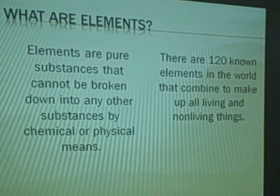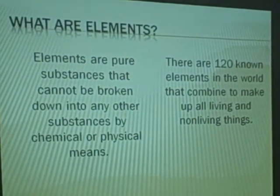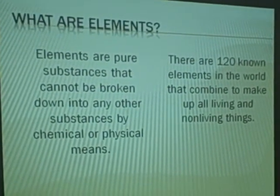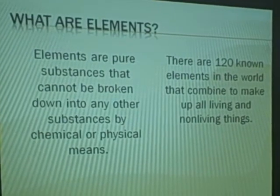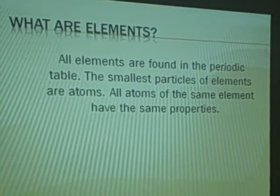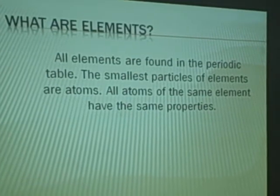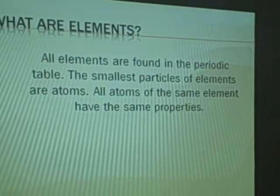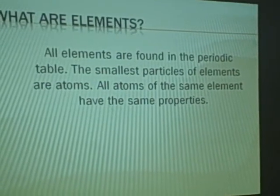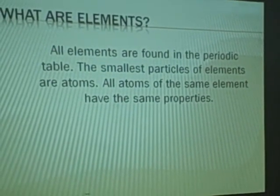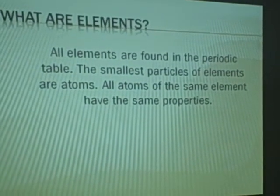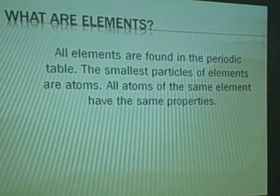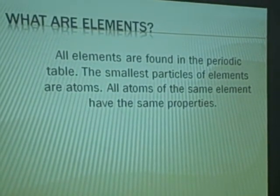Elements are pure substances that cannot be broken down into any other substances by chemical or physical means. They are found in the periodic table. And the smallest particles of elements are atoms. So you can keep breaking down elements into teeny, more than microscopic, you can't even see them with a microscope. Atoms. All atoms of the same element have the same properties.